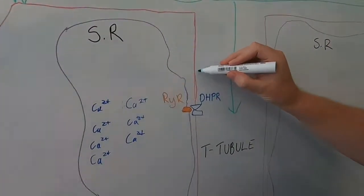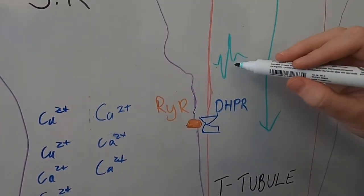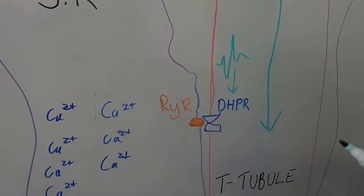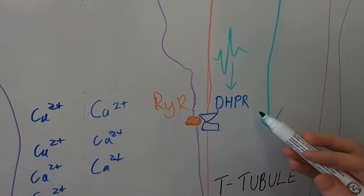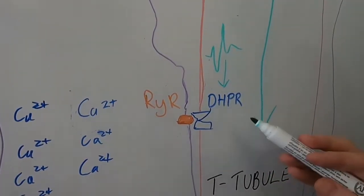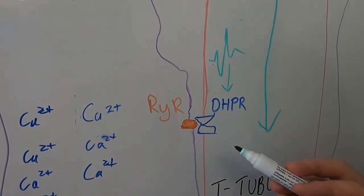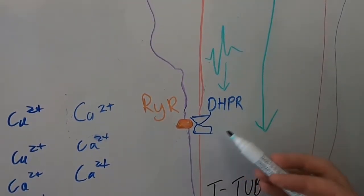An action potential will activate this receptor here called the dihydropyridine receptor. Now this acts like a voltage sensor which is electrically activated, so when the action potential comes along, it becomes active.